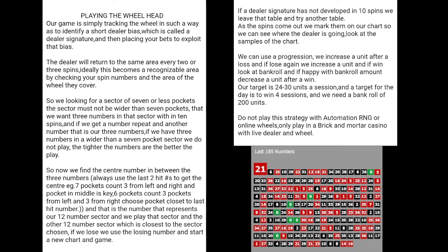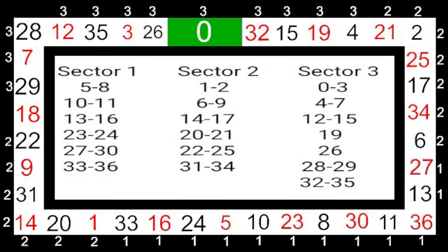The next thing I'm going to show you is the wheel layout and the sectors you'll be playing. Here's the wheel. You can see the black border on the outside. You've got threes, then twos, then ones — those are the three sectors. And in the middle of the wheel you can see sector one, sector two, and sector three.